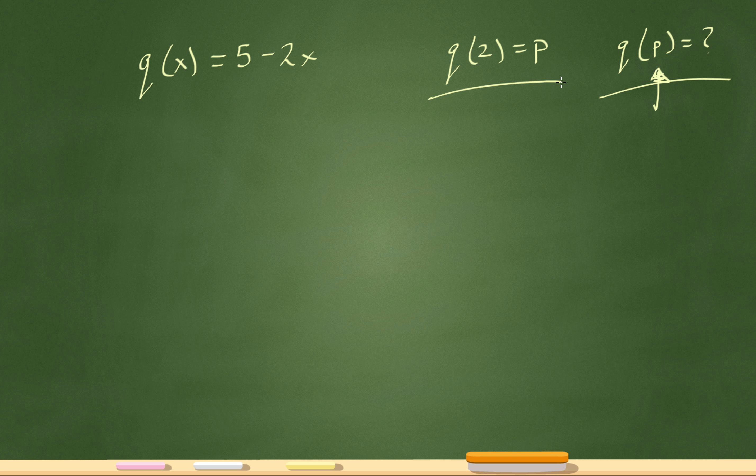Now if I'm moving backwards, q of 2 tells me equals p. So now it gives me this main function q of x equals 5 minus 2x.